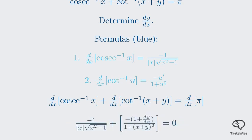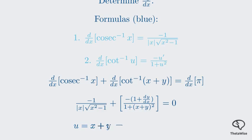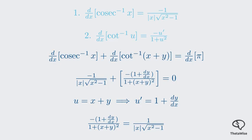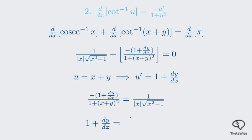Differentiating both sides, the derivative of pi is 0. For the cot inverse of x plus y term, u equals x plus y, so u prime equals 1 plus dy/dx. This is why we have 1 plus dy/dx in the numerator of the second term. Now we rearrange to solve for dy/dx. Moving the first term to the right side and then multiplying both sides by negative 1 plus u squared isolates the term containing dy/dx, leaving us with 1 plus dy/dx equals the negative of 1 plus cot y squared, all over the absolute value of x times the square root of x squared minus 1.